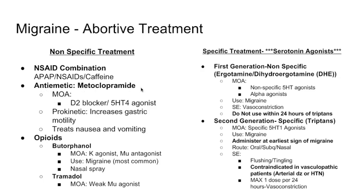Antiemetics are also used, like metoclopramide. Metoclopramide is a dopamine blocker and also a serotonin agonist. There is some dopamine hypersensitivity that causes nausea and vomiting — dopamine receptors in the brain cause nausea and dopamine receptors in the stomach cause vomiting. Metoclopramide is specifically a prokinetic agent, meaning it increases gastric motility.